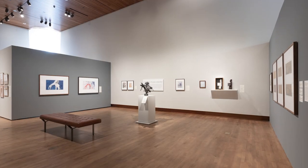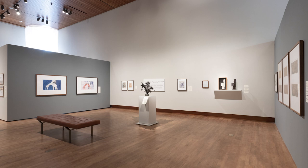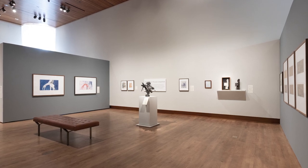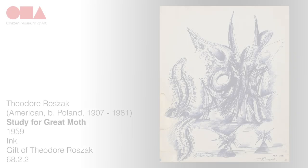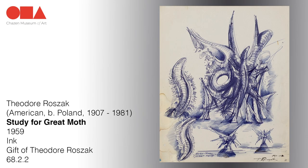Theodore Rojack transforms his conception of a moth from two dimensions into three. Rojack plays with the evolution of a moth from a larva in the curving forms on the left of the sheet. Soft bristles spin off of the larva as they seem to almost crawl off the page. That same movement appears in the wings of the largest moth figure, whose energy vibrates in the sharp strokes of the ink.